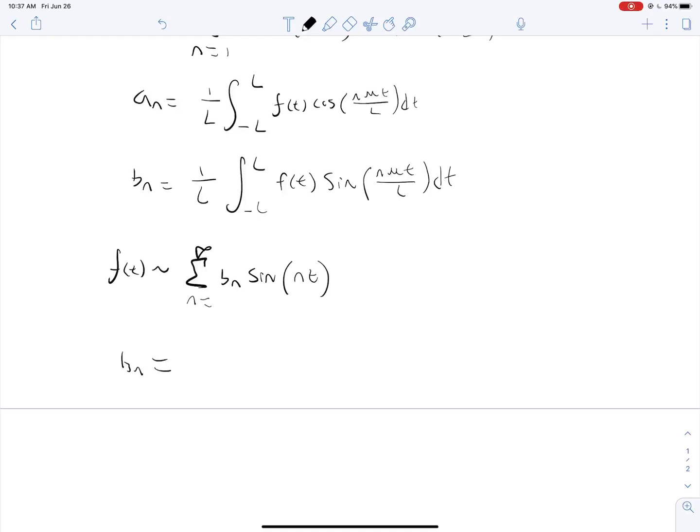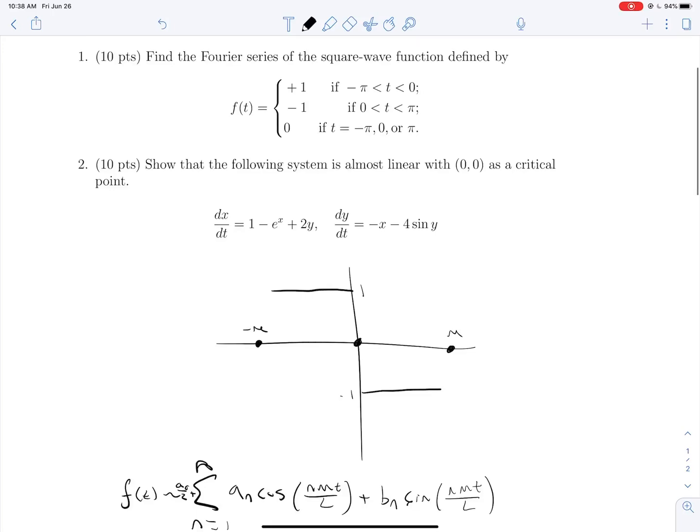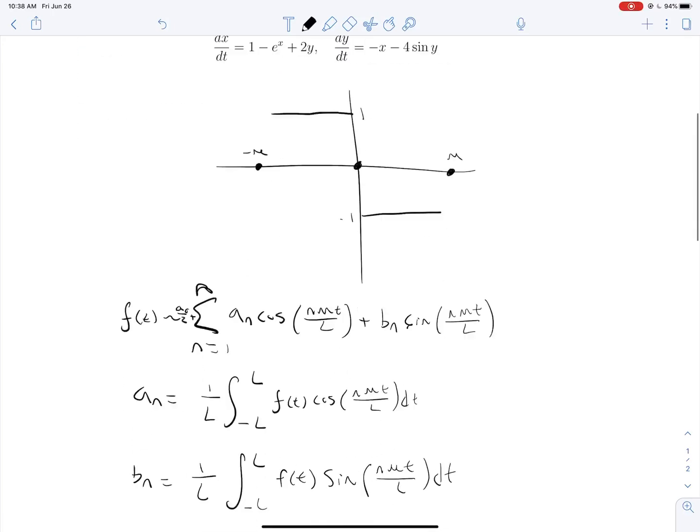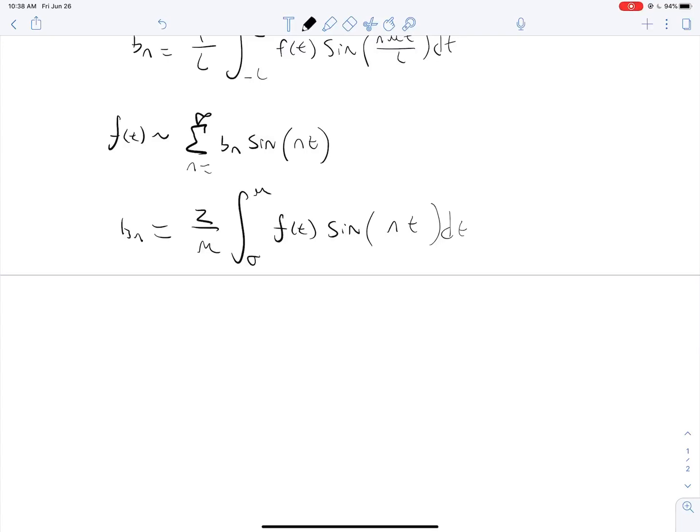Our b_n we can write as 2 over l integral from 0 to l of f of t sine(n pi t over l) dt. Since l equals pi, this becomes 2 over pi integral from 0 to pi. What is f of t on this interval from 0 to pi? They tell us f of t equals negative 1 from 0 to pi.